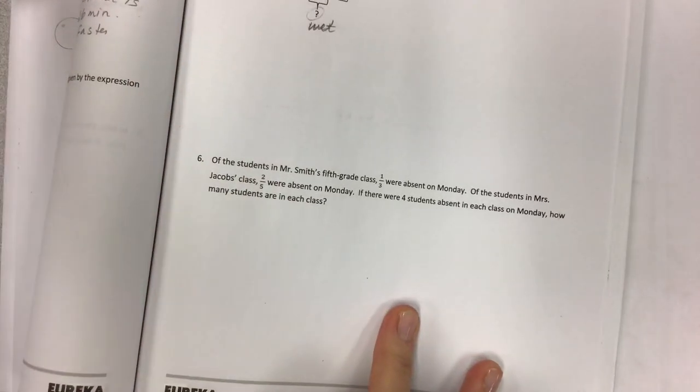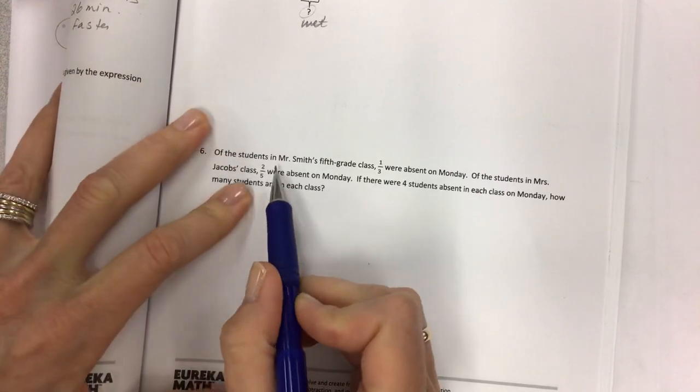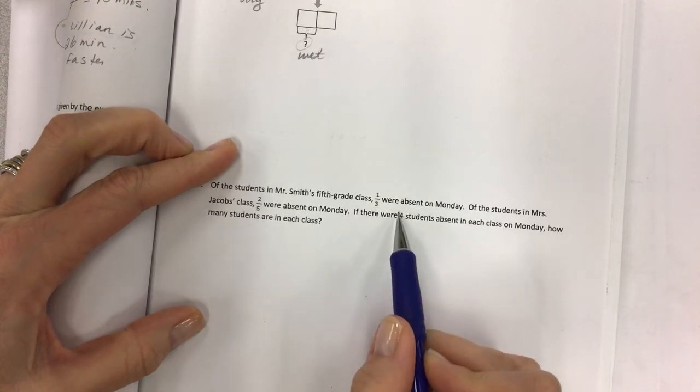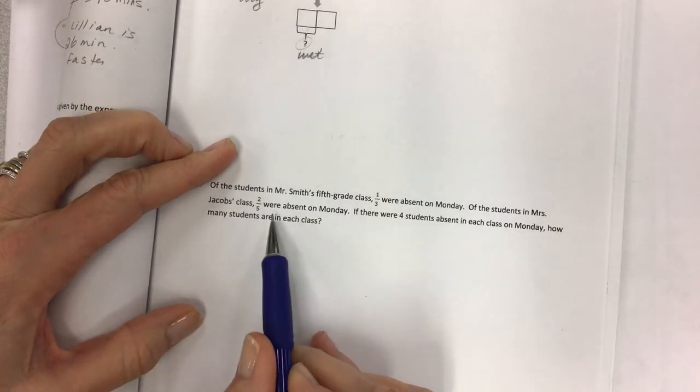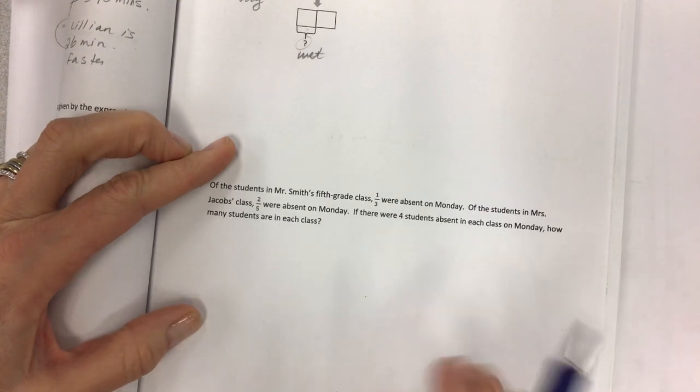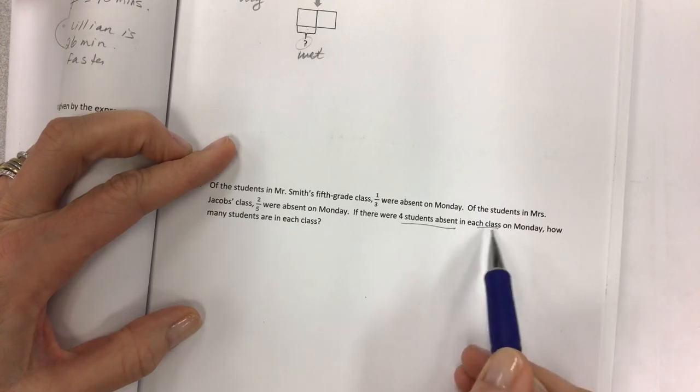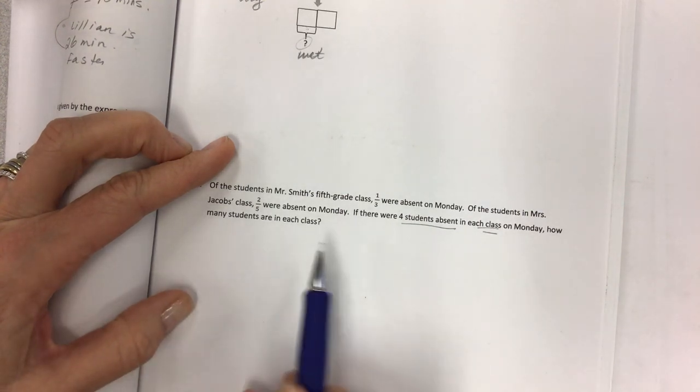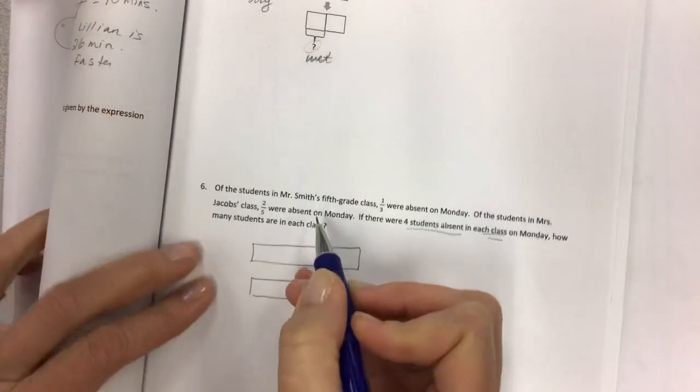I hope that's enough for you guys to kind of get you started. At least the tape diagram is there. And then there's really only one problem left. And it is about Mr. Smith's fifth grade class and Mrs. Jacobs' class. Of the students in Mr. Smith's fifth grade class, 1/3 were absent on Monday. That's not very good. Of the students in Mrs. Jacobs' class, 2/5 were absent on Monday. Holy moly. We don't even want to talk about COVID. If there were 4 students absent in each class, so apparently their classes are very small, unlike mine, which is super big, how many students are in each class? Let's make a tape diagram so we can identify each teacher's class.